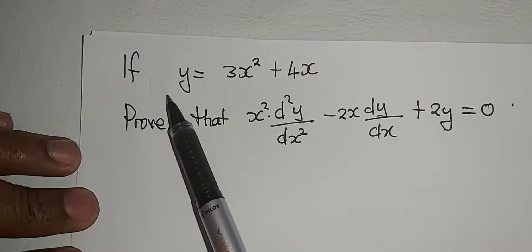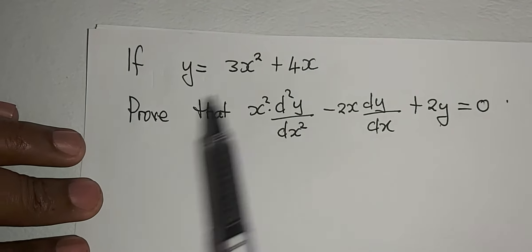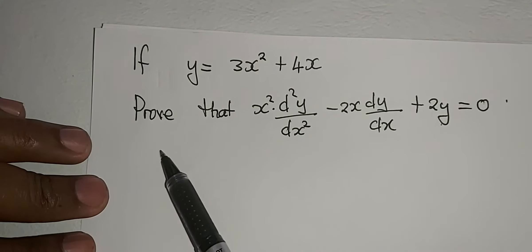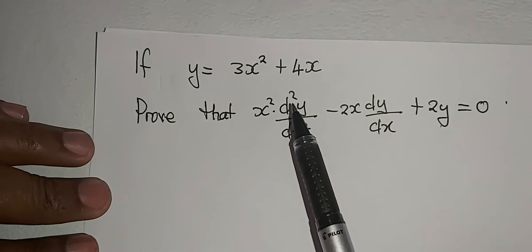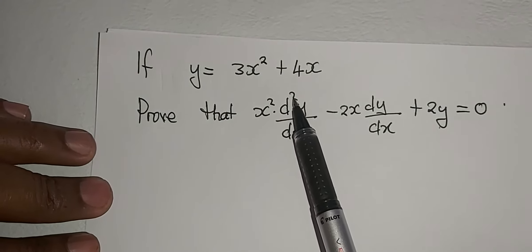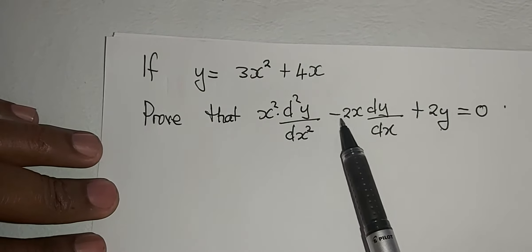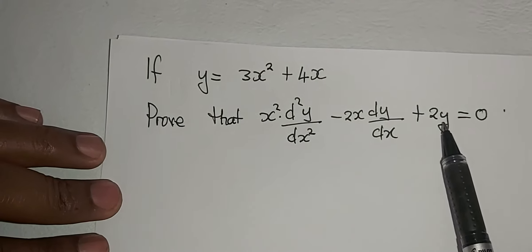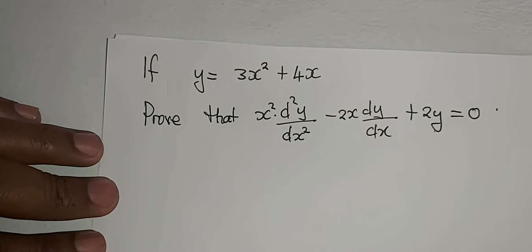In this case we are given that if y equals 3x squared plus 4x, we must prove that x squared d squared y over dx squared minus 2x dy dx plus 2y equals 0. So we need to prove that one.